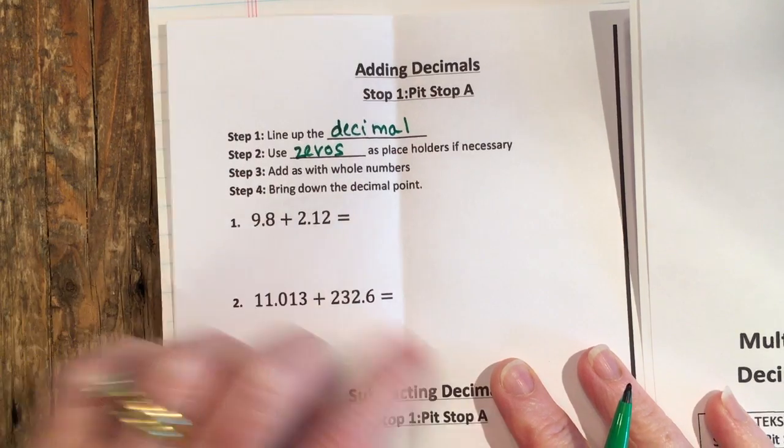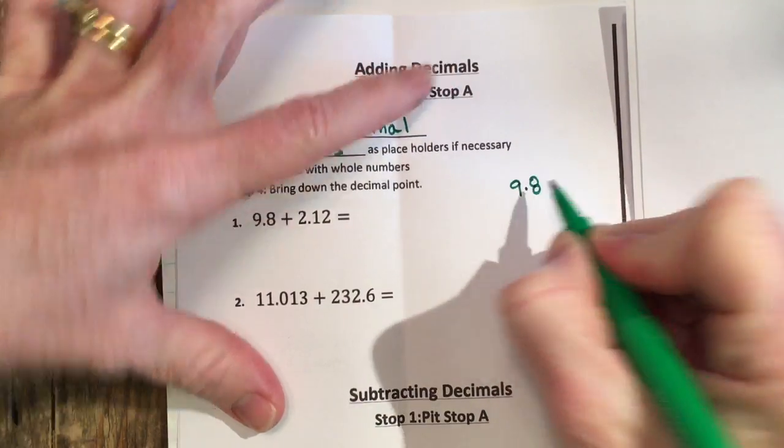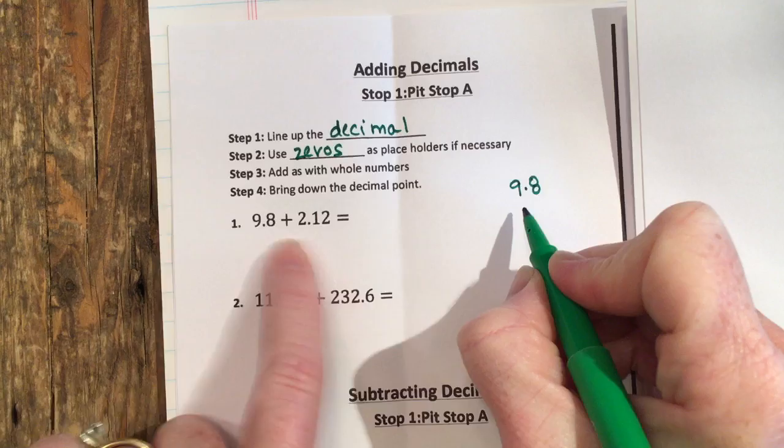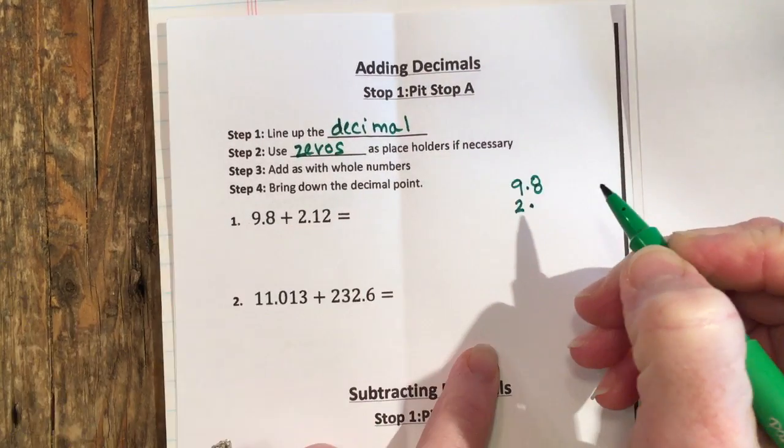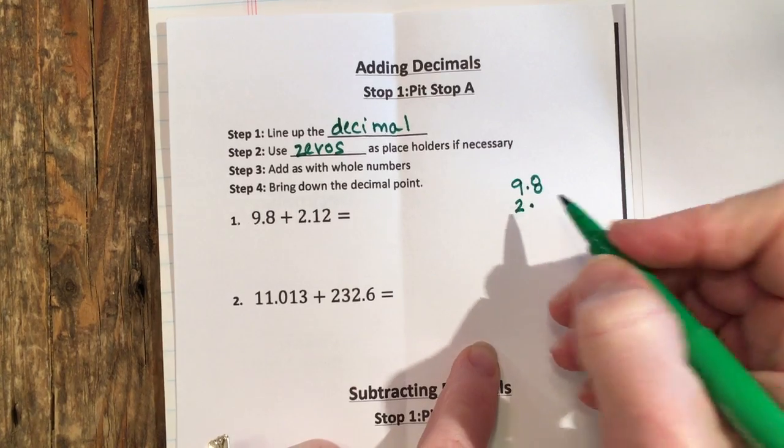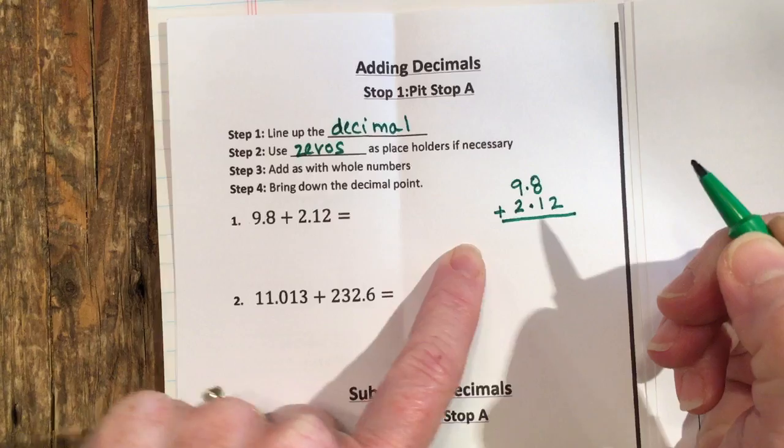So let's try that. We've got the first one here: 9.8 and 2.12. So I'm going to put the 2 under the 9 so that the decimal will line up with the 1 and the 9.8, and then I'm going to have a 1 and a 2 here.